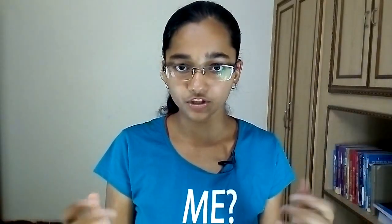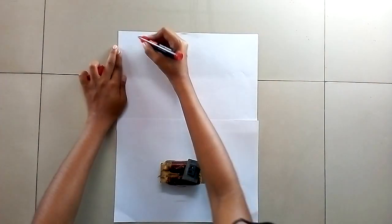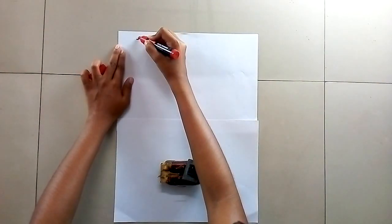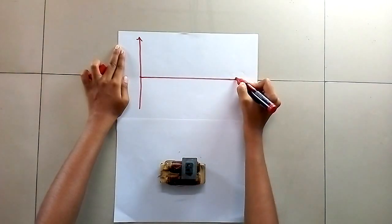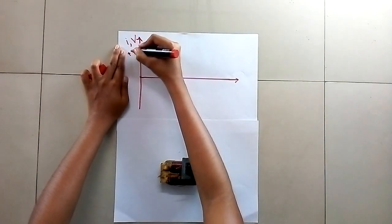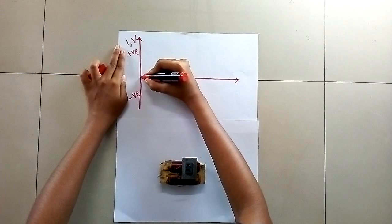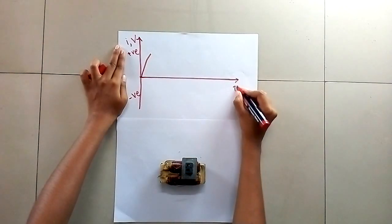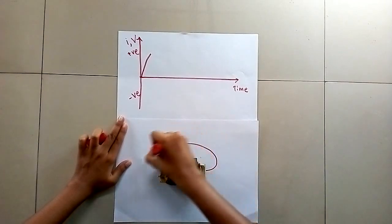A magnetic ballast is like an inductor — it stores energy in the magnetic fields that are produced around it. As the AC voltage increases in the positive direction, the magnetic field produced by the magnetic ballast also increases.